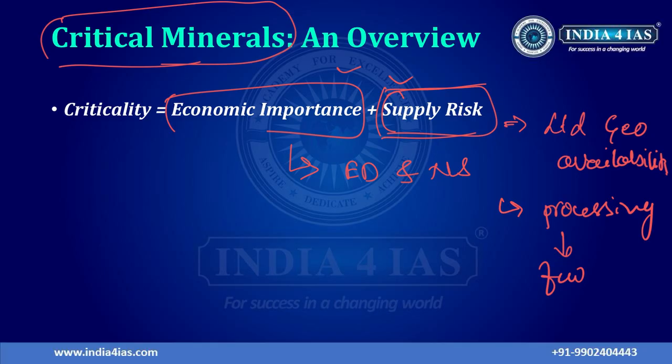So these are the key characteristics of critical minerals. First, they are essential for economic development and national security. Second, they possess very high supply risk due to limited geographical availability and concentration of processing industry in very few countries. For example, China processes around 70% of the world's critical minerals.